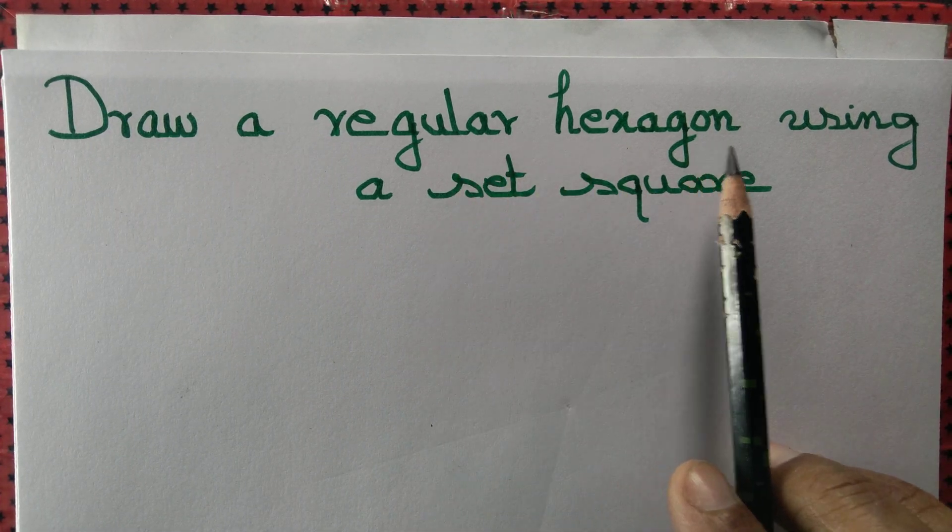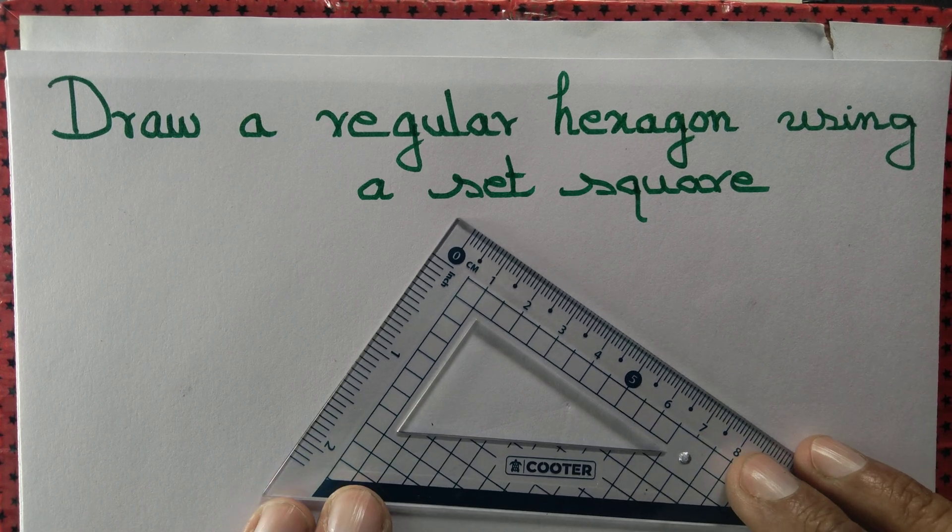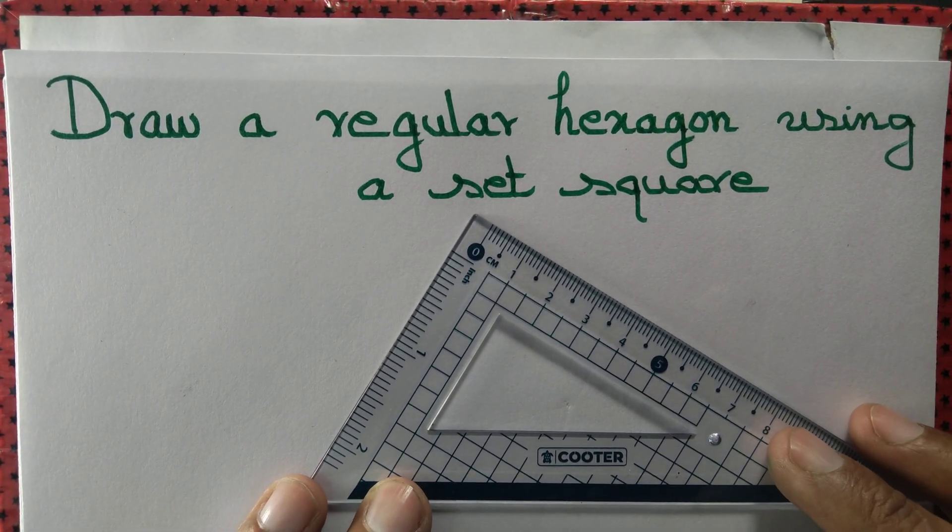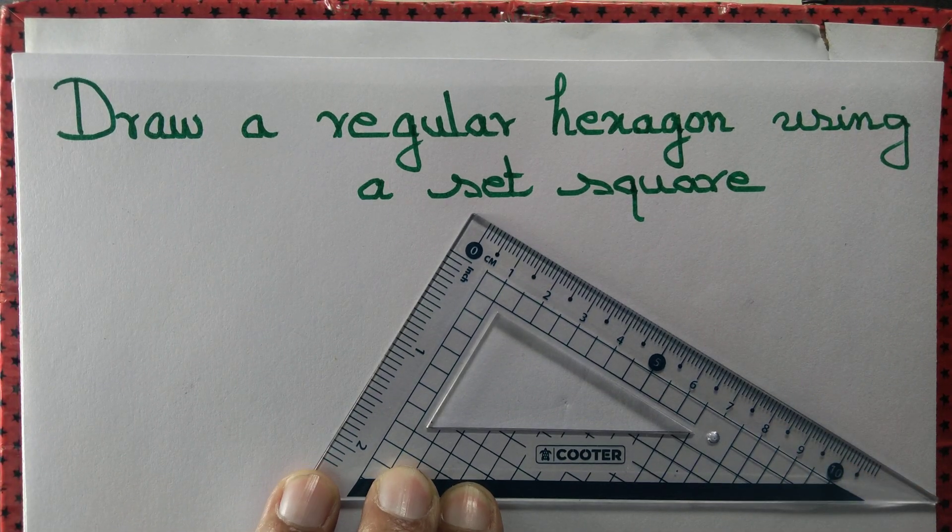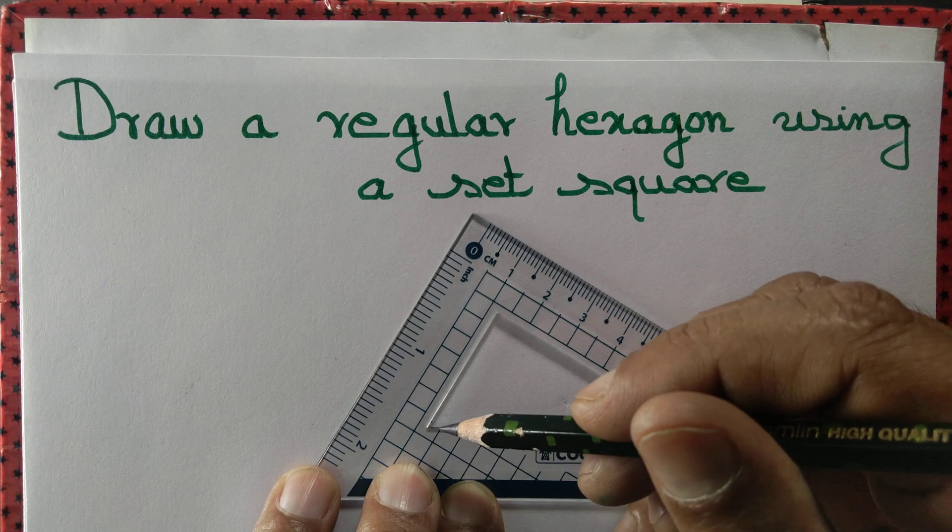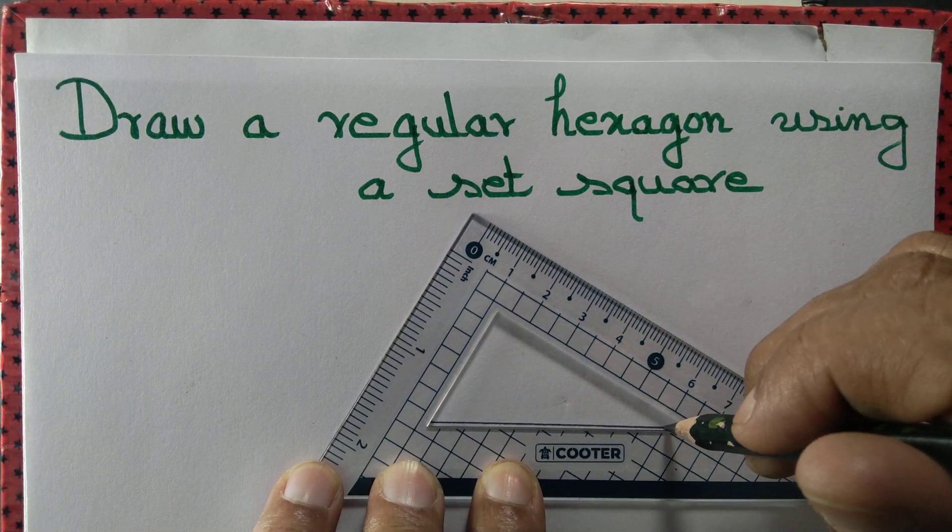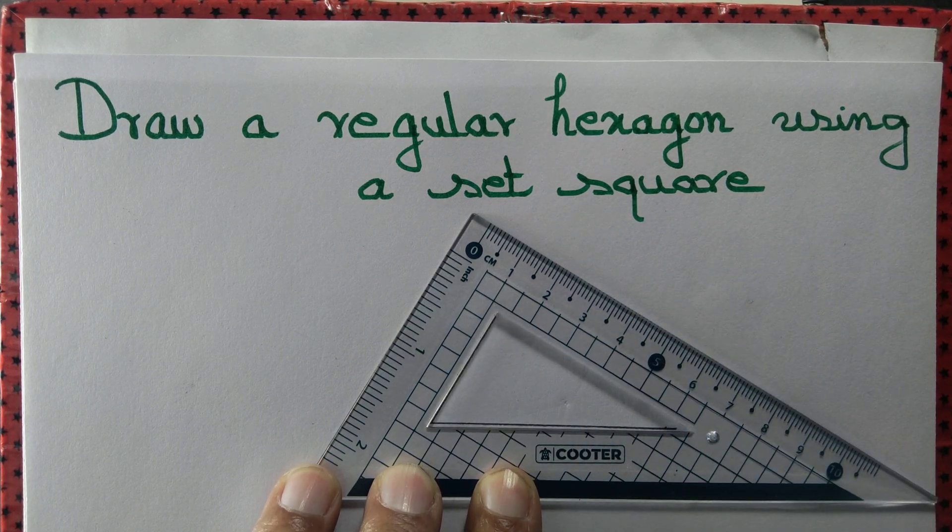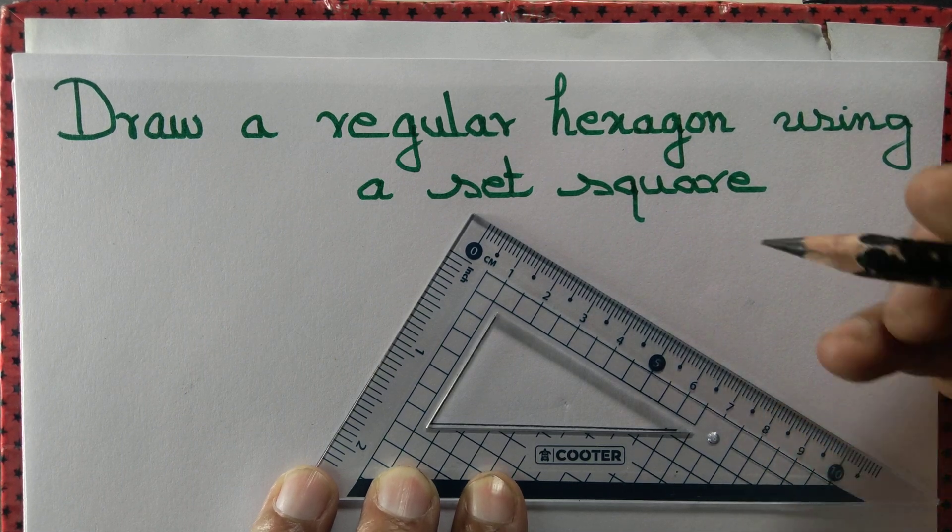Let us draw a regular hexagon using a set square. We have a set square and one of the angles of the set square measures 60 degrees. We draw an angle that measures 60 degrees using the set square.